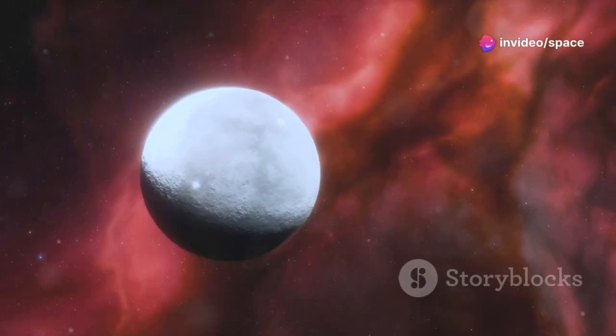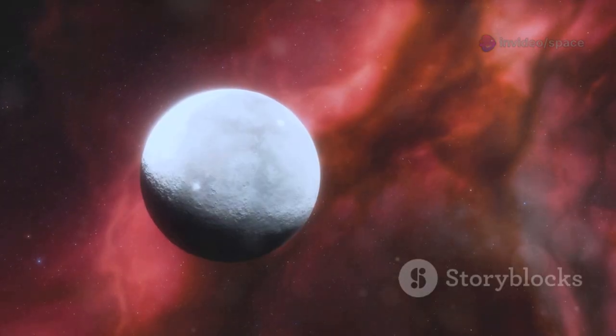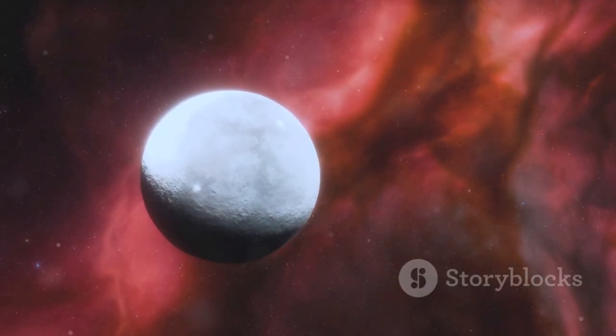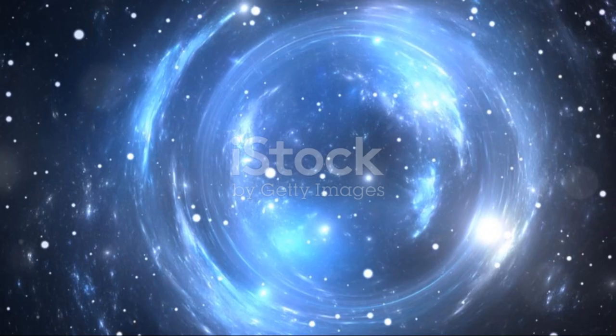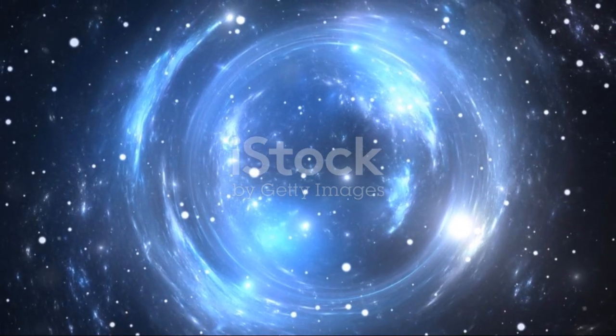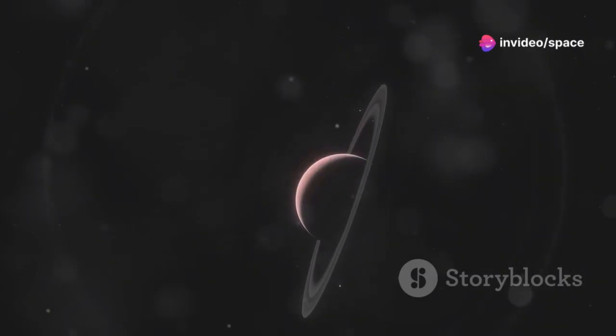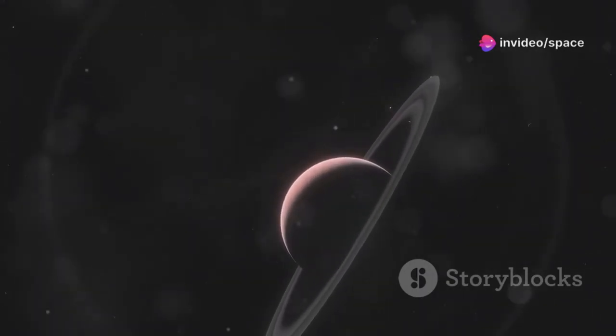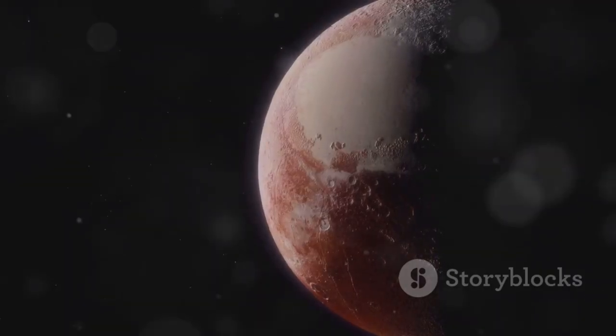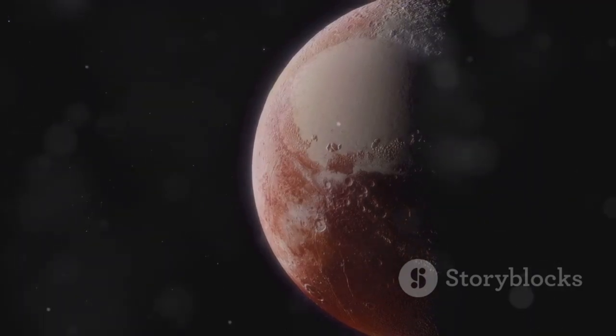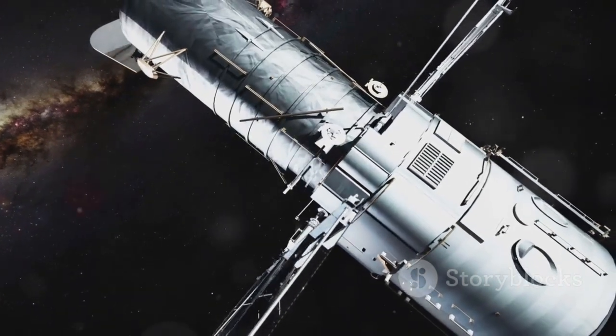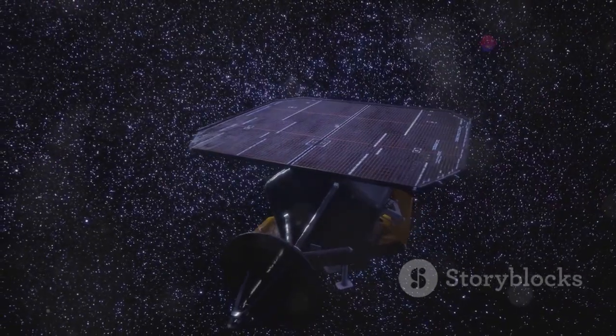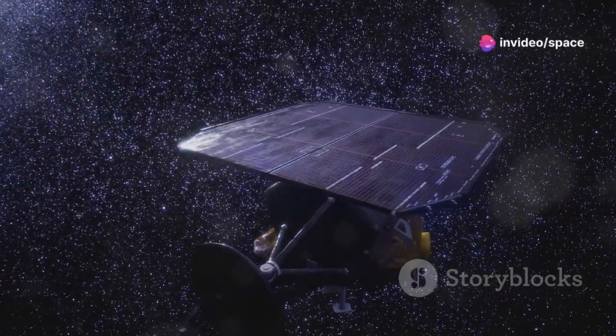The conclusion that 3i-Atlas is an artificial object is profound and unsettling. It is a conclusion with implications that ripple through astronomy, physics, and our philosophy as a species. For the first time, we have tangible evidence of technology from beyond our solar system. The nature of the object raises questions. Why is it so dark? Why absorb energy so efficiently? One theory is that it is a piece of derelict technology or a self-replicating probe.